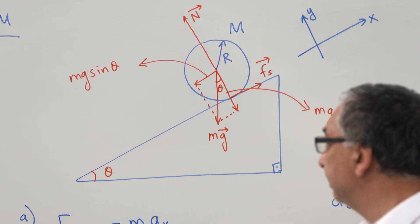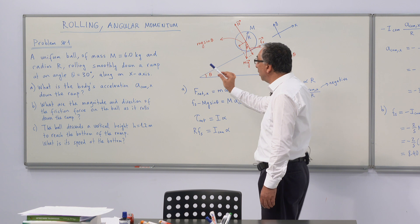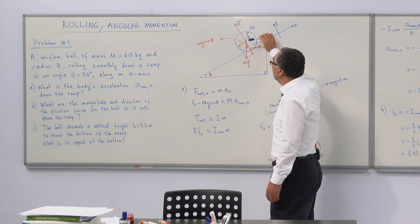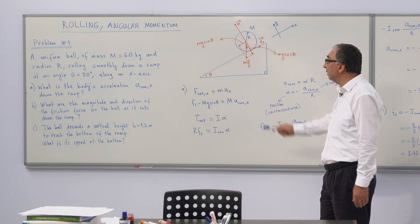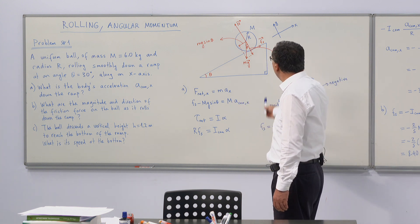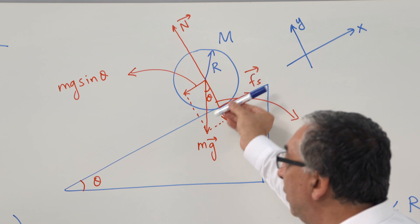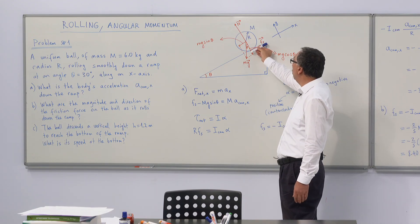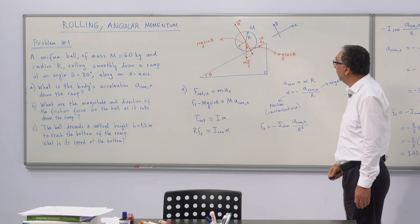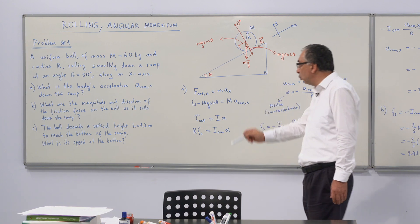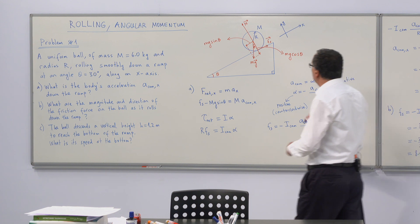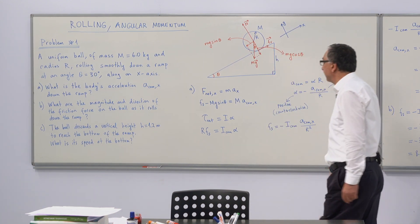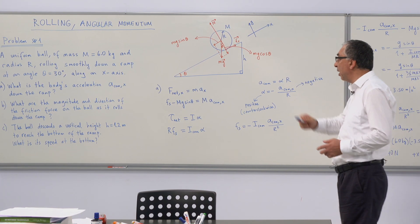The ball is rolling because of friction — there is a static friction that causes the rolling. The first part of the question asks us to determine the center of mass acceleration down the ramp. The second part asks for the magnitude and direction of the frictional force. The last part asks for the speed of the ball when it reaches the bottom of the ramp at height h.